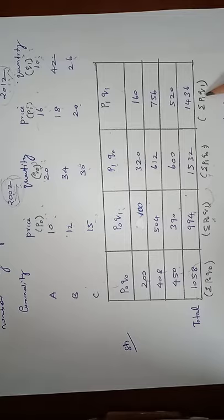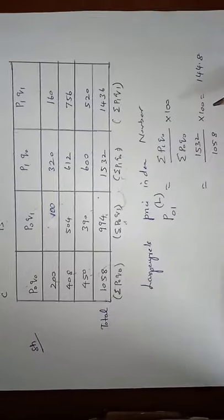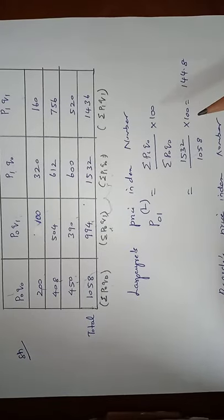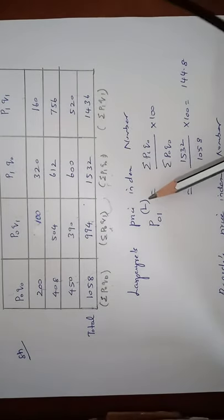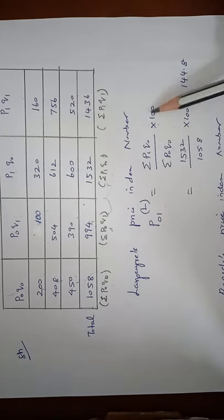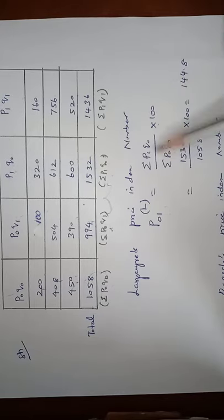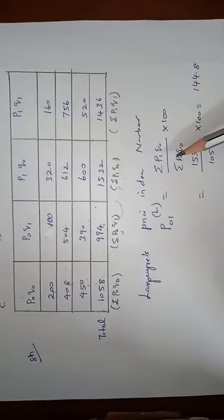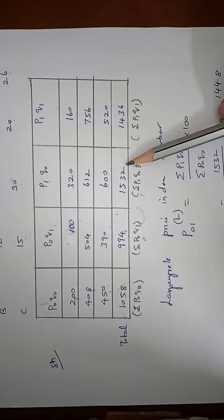So sigma of P1Q1 is 1436. Instead of applying the Laspeyres price index number formula is P1 to P0. Laspeyres can be taken as sigma P1Q0 by sigma P0 into Q0 into 100. So sigma P1Q0 value is 1532.